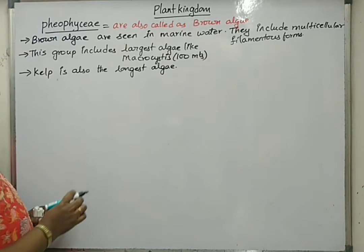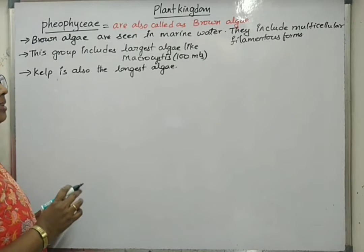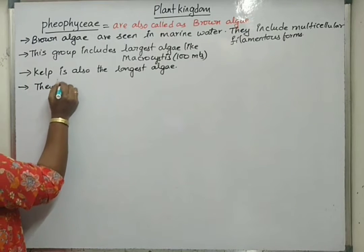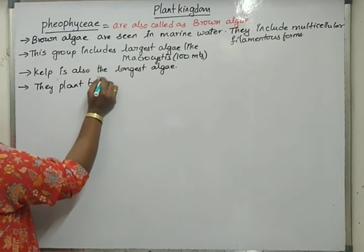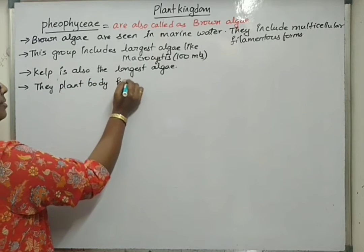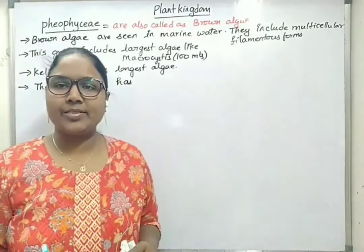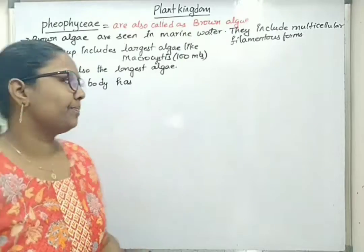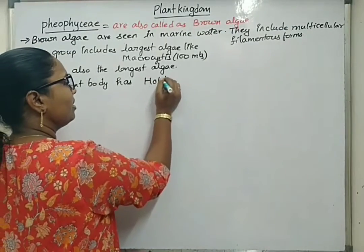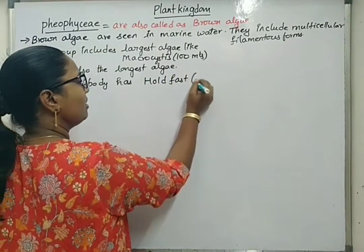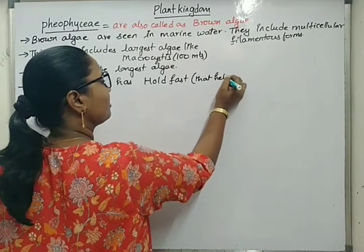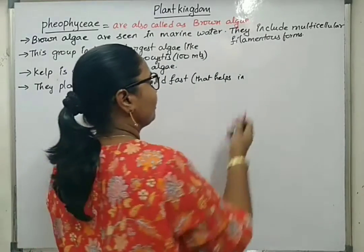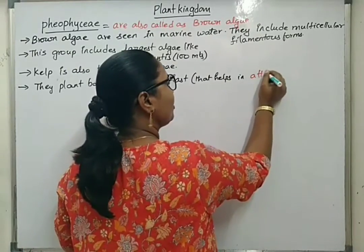The body shape here exhibits a thallophytic body. Their plant body has, at the bottom part, a special structure called holdfast, which sticks to the substratum. Holdfast helps in attaching to the substratum.